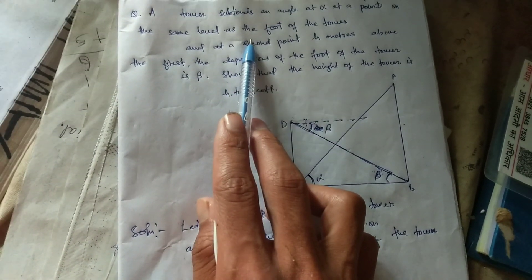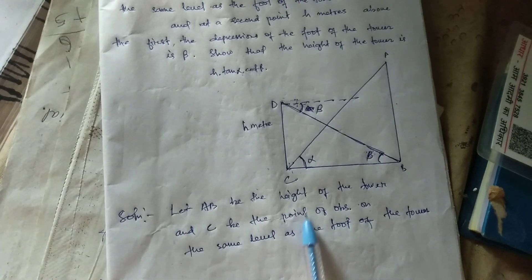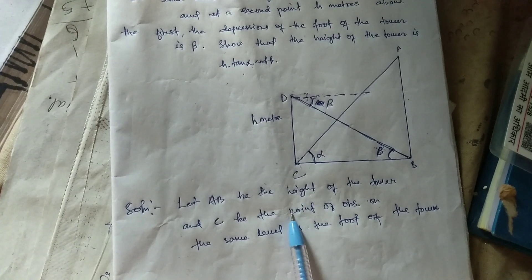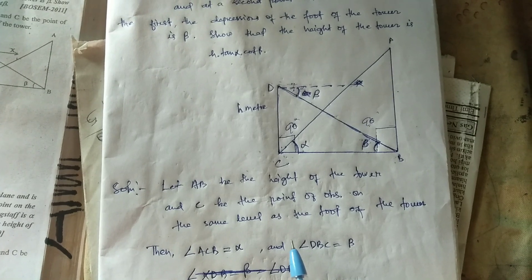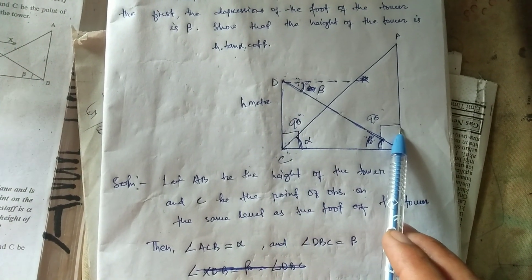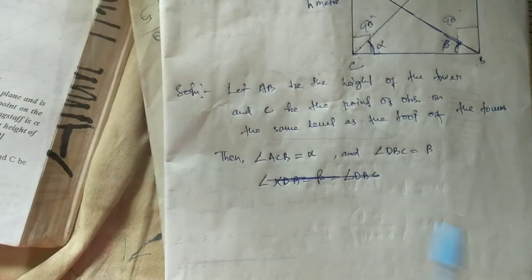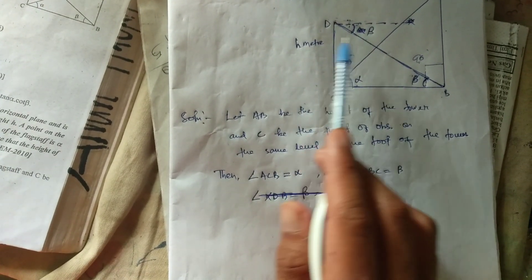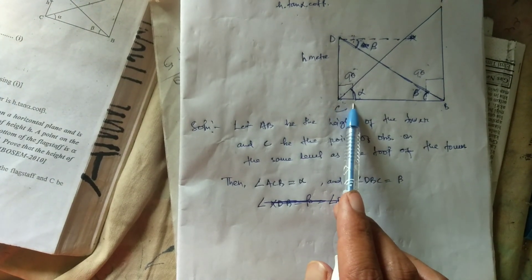From the given problem, C is the point of observation at the same level as the foot of the tower. Looking at the diagram, we can see there are two right triangles — triangle DCB with a 90-degree angle, and triangle ABC with a 90-degree angle at B. Angle ACB equals alpha, and angle DBC equals beta.